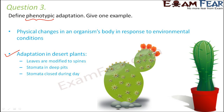In desert plants, the leaves change in their appearance and get modified to spines. The stomata get buried in deep pits so they cannot lose a lot of water through transpiration, and stomata also remain closed during the day. Desert plants also have thick cuticles which help to reduce water loss. These are all physical changes, and that is an example of phenotypic adaptation.